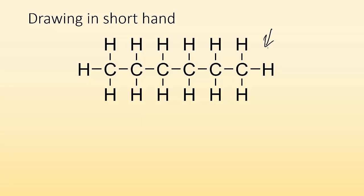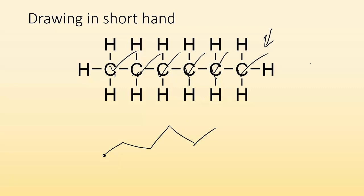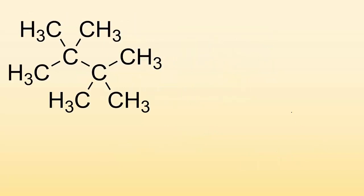Now, how do you go from a full Lewis structure to the shorthand? Let's think about this — I've got one, two, three, four, five, six carbons. I start with this carbon, draw the end of it, then go boom — line — so that's this carbon and this carbon. Then boom, that's this carbon, boom that one, boom that one, and boom that one. If I were to draw this neater, that would be the shorthand for that structure.